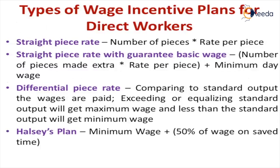For direct workers — direct workers are the labor who are directly involved in the production process — the following types of plans are given. The first is straight piece rate: there is a basic rate and we know how many products can be manufactured in a shift. Say for example, 100 pieces are made in a shift and he is going to get 10 rupees. If he makes extra, that has to be multiplied with the wage rate. If he makes 110, then obviously he should get 110 rupees.